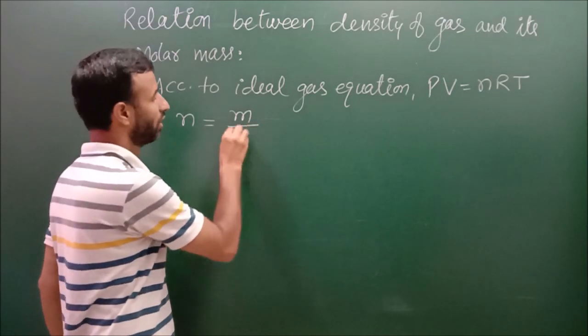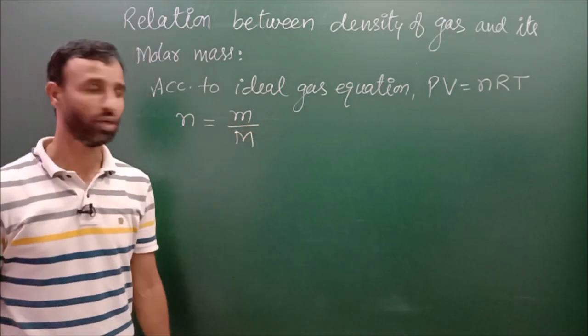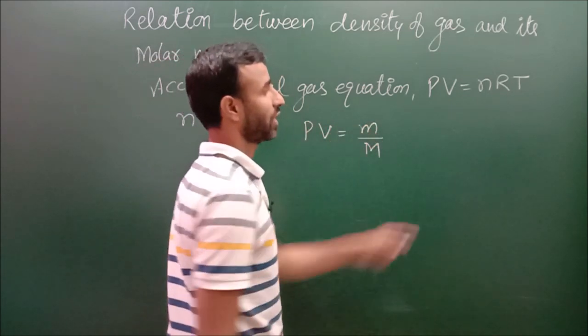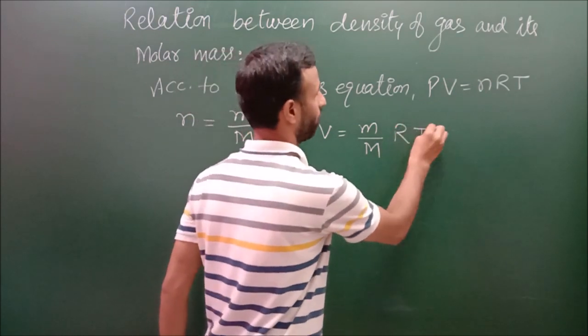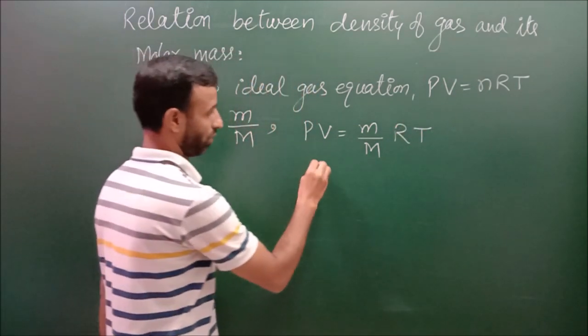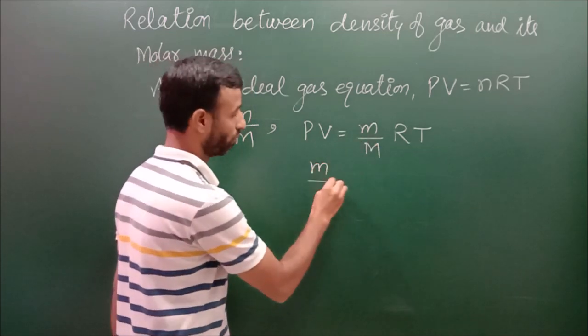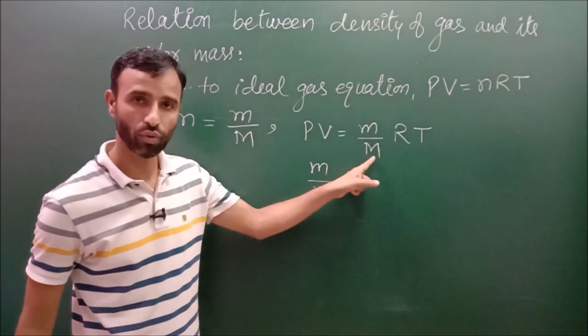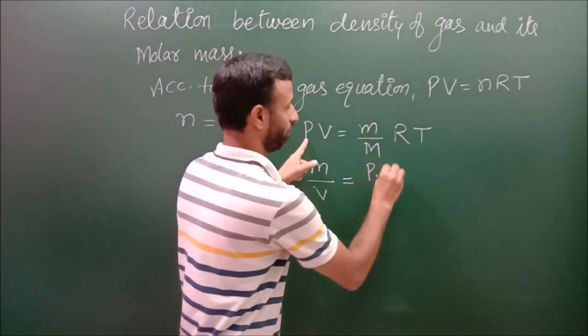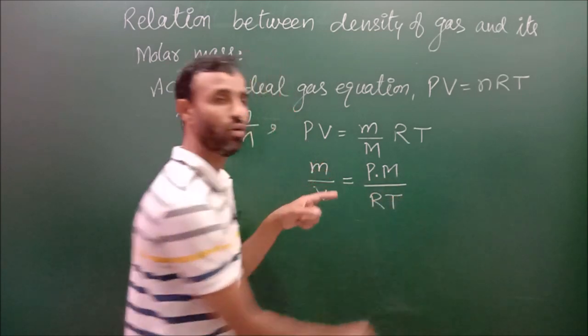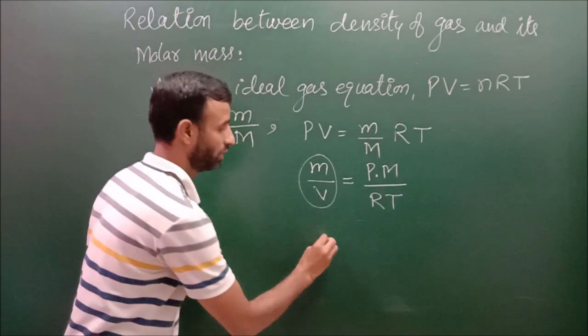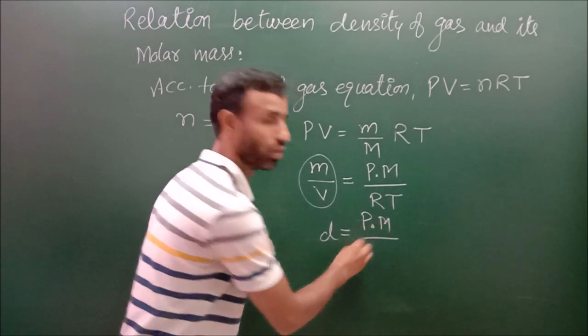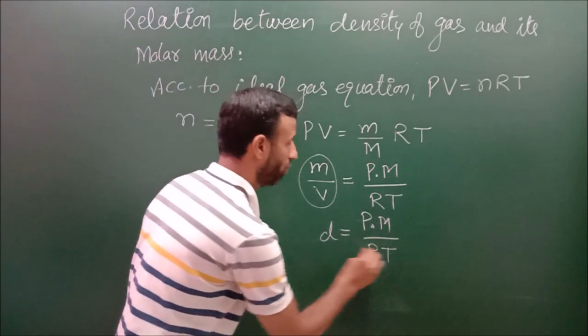Now number of moles is equal to mass of the gas small m divided by molar mass, so just put small m over capital M instead of n into RT. In this way, mass by volume, that is density, so mass over volume is equal to P into M divided by R into T. And this M upon V is density, so density is equal to pressure into molar mass divided by R into T.